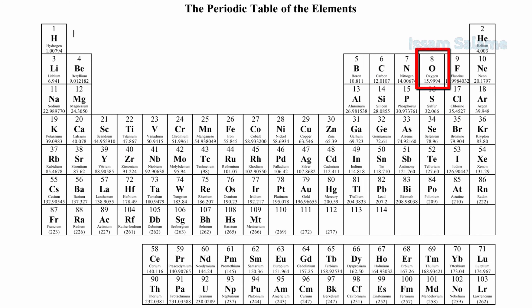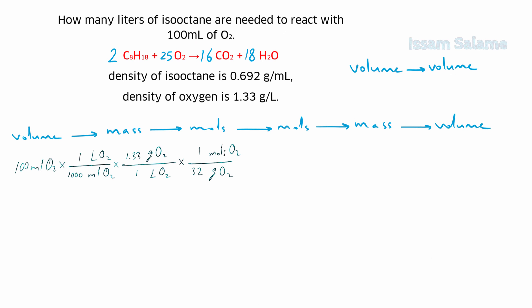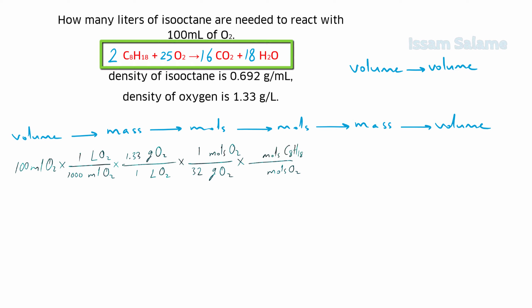The molar mass of oxygen from the periodic table is 16, so the molar mass of O2 gas is 32, which we write next to grams of oxygen. Then we multiply by another fraction to convert moles of oxygen to moles of isooctane: moles of oxygen in the denominator and moles of isooctane in the numerator. From the balanced equation, the coefficient is 25 next to oxygen and 2 next to isooctane.